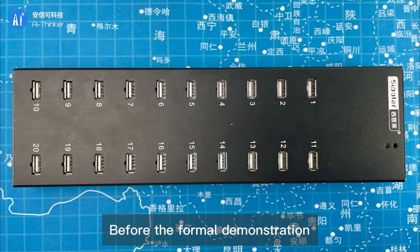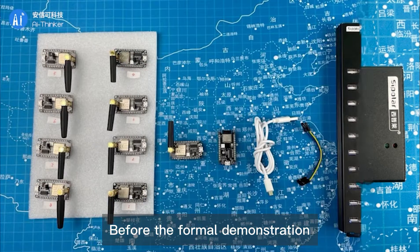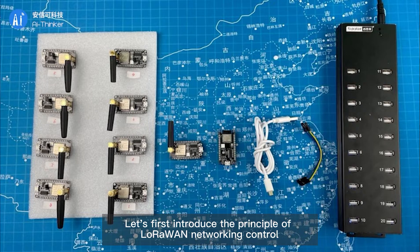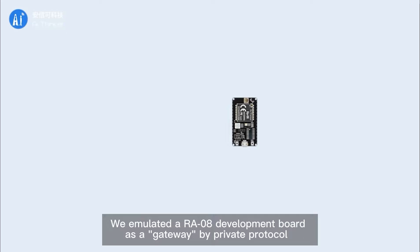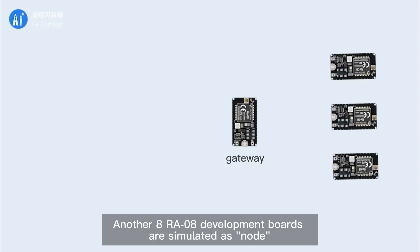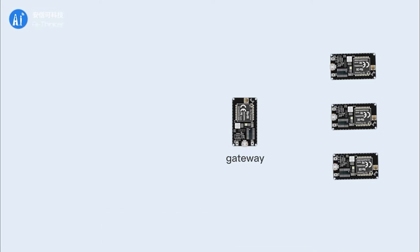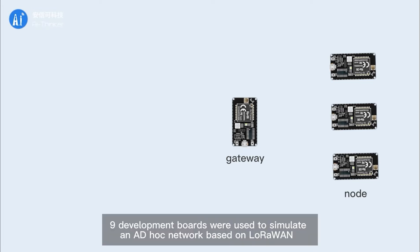Before the formal demonstration, let us first introduce the principle of LoRa networking control. We emulate one IA0A development board as a gateway using a private protocol, and the other eight IA0A development boards are simulated as nodes. These nine development boards together simulate an ad hoc network based on LoRa.